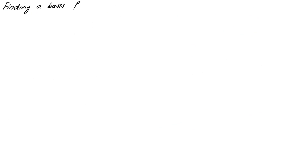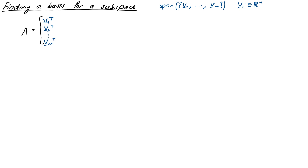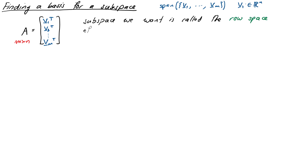Let's return to our set of m vectors. We can form a matrix A by writing these vectors as rows: v1^T as the first row, v2^T as the second row, all the way down to vm^T. The subspace we're after - spanned by what are now the rows of this matrix - is called the row space of A, which is the span, or the set of all linear combinations, of the rows of the matrix.